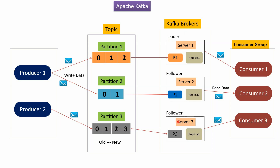Server 3 has partition 3. And replica of partition 1 is in server 1, replica of partition 2 is in server 2, and replica of partition 3 is in server 3. Here you can see the topic.